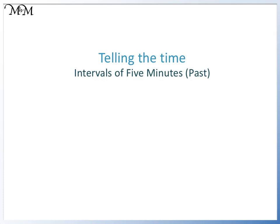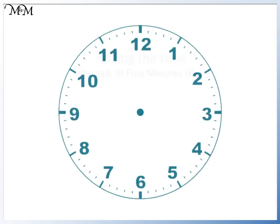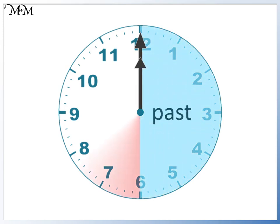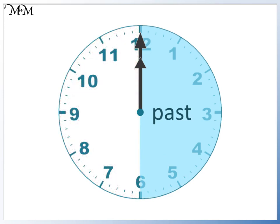Hi and welcome to our lesson on telling the time. We will be looking at intervals of 5 minutes past the hour. This hand is the minute hand, and this shorter hand is the hour hand. We think of the first half of the clock as minutes past the hour, and the second half as minutes to the next hour. In this lesson we will be looking at minutes past the hour.